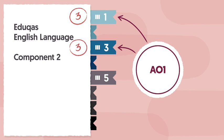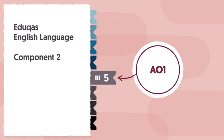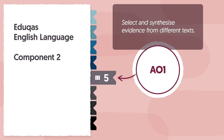To round these marks up to 10, we need another AO1 question, but this time worth 4 marks. This is where Question 5 comes in. Even though this question tests the same AO as previous questions, there's a difference. For this question you need to select and synthesise evidence from different texts.